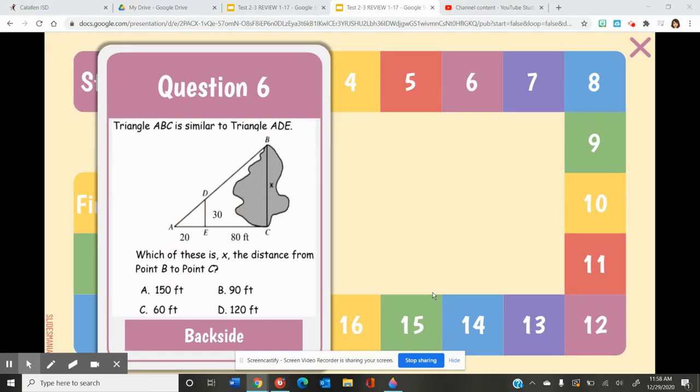Number 6. Triangle ABC is similar to triangle ADE. Which of these is X, the distance from point B to point C?